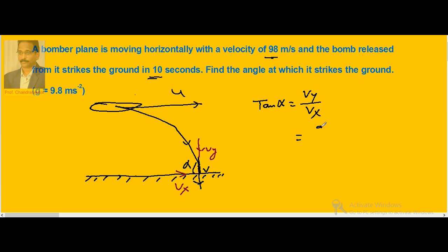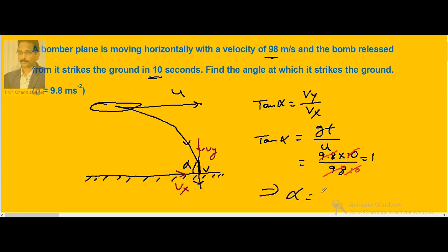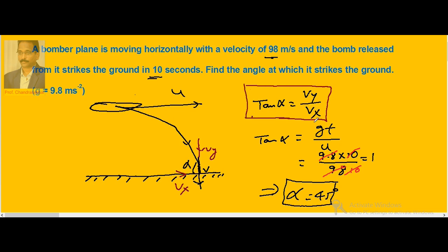For a horizontal projectile, the vertical component of velocity after time t is g·t. So tan alpha equals g·t, where g is 9.8 and t is 10 seconds, and u is 98. Substituting: (9.8 × 10) / 98 = 1, so tan alpha equals 1, which means alpha equals 45 degrees. The bomb strikes the ground at an angle of 45 degrees.